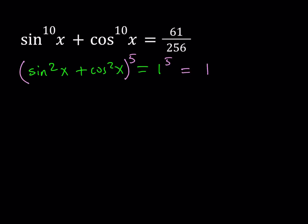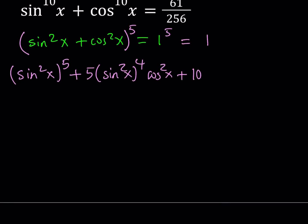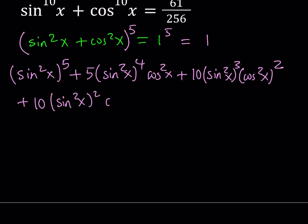From the binomial theorem, a plus b to the 5th power involves the coefficients 1, 5, 10, 10, 5, and 1 from Pascal's triangle. So let's go ahead and expand it. We have sine squared x to the 5th power as our first term, and then 5 times sine squared x to the 4th, multiplied by cosine squared x.